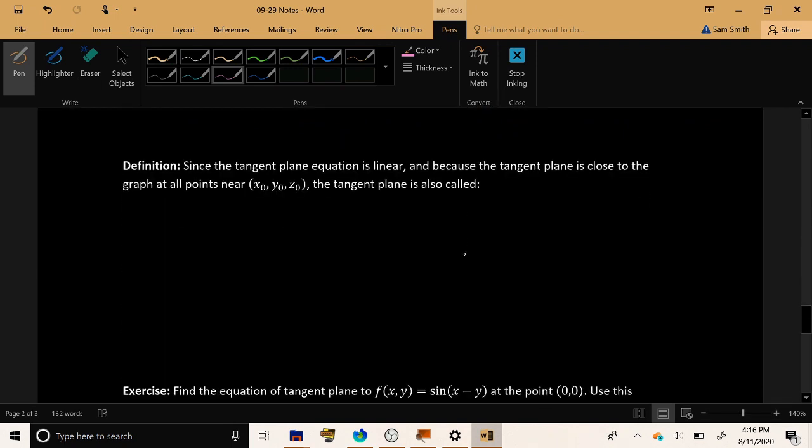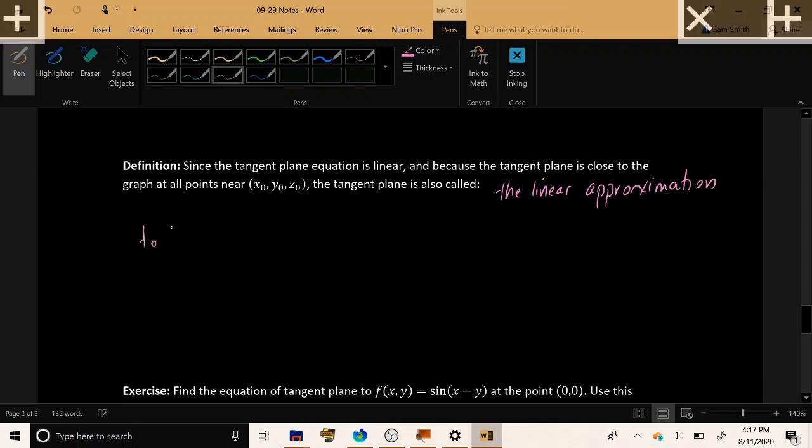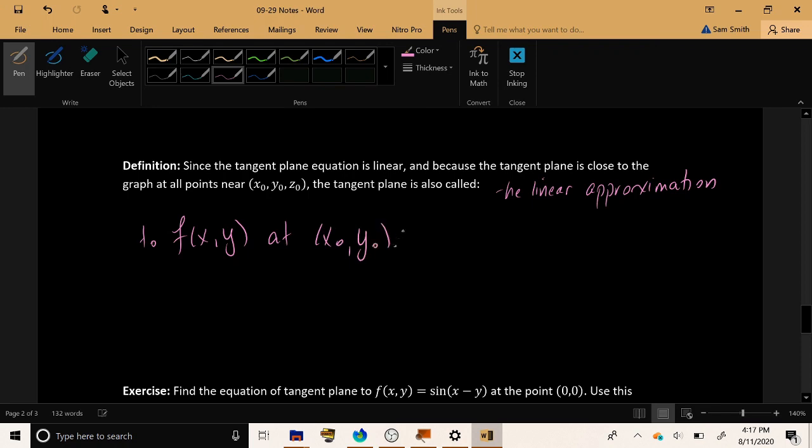Now, just as in the single variable case, our tangent plane is also referred to, is also called the linear approximation to f of x, y at the point x naught, y naught.